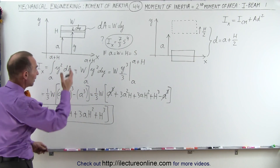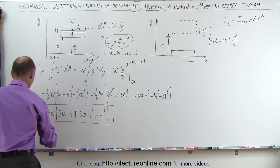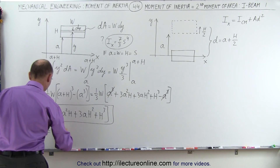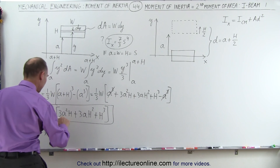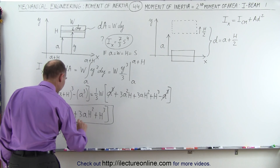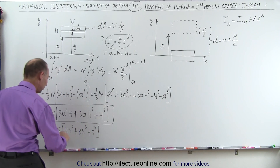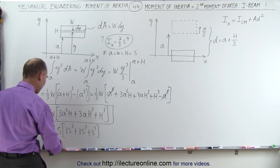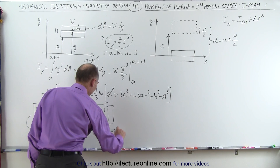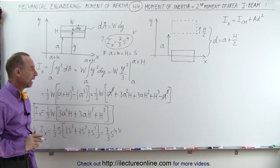Let's replace everything by S to see if we end up with the very same result. The moment of inertia relative to x is one-third S times 3S³ plus 3S³ plus S³. Notice we have 7S³ times S — that's 7S⁴ divided by 3, which is indeed seven-thirds S to the fourth power. This shows that it reduces to something we've seen before, so this looks like a reasonable answer.